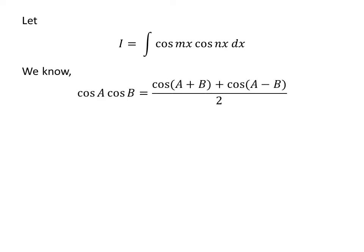We know the trigonometry identity: cosine of a times cosine of b is equal to cosine of a plus b plus cosine of a minus b, upon 2. The video appearing in the upper right corner explains the proof of this trigonometry identity, and the link has also been given in the description section.